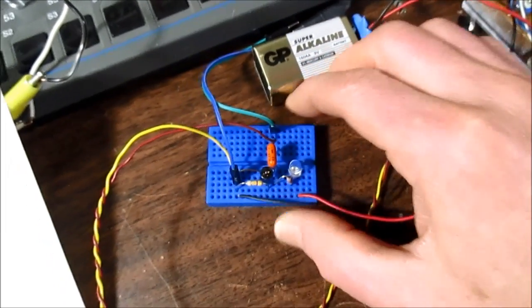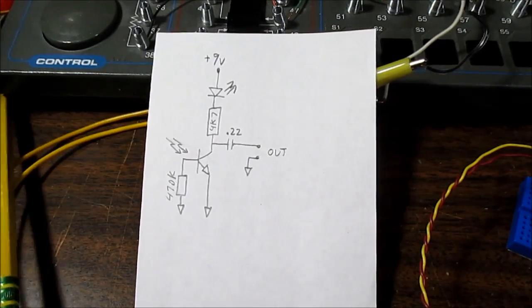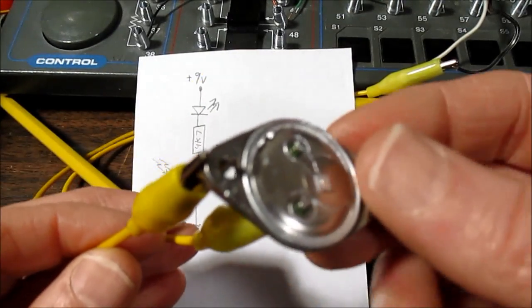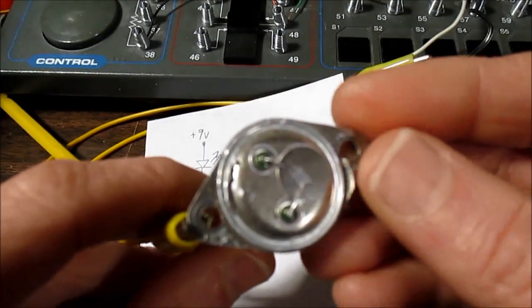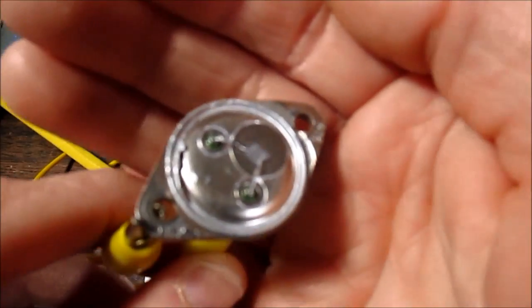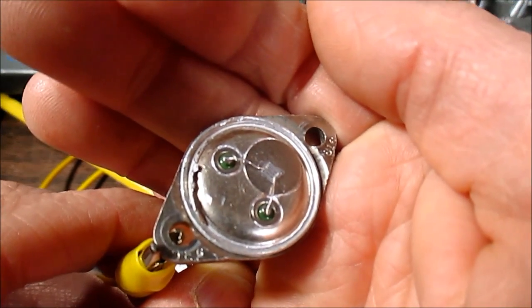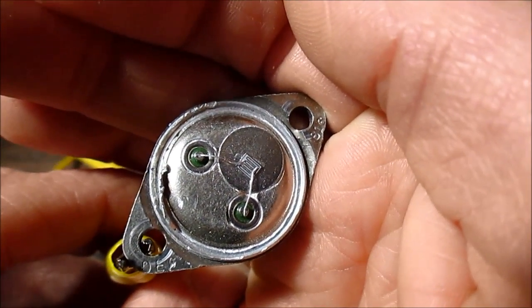It might be of some interest to you that even ordinary transistors are sensitive to light. This is a TO3 cased transistor. I removed the top dome. And you can see, if we can get a focus on that. There we go. There is a little transistor there.